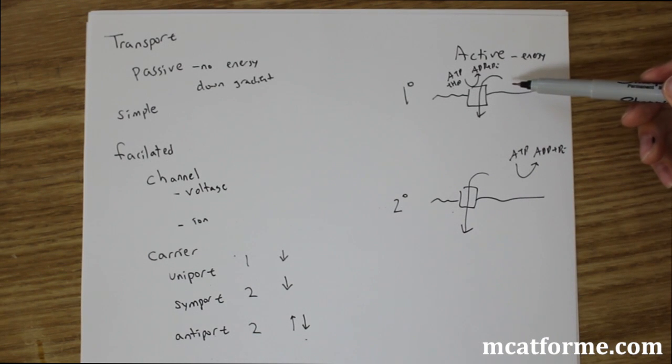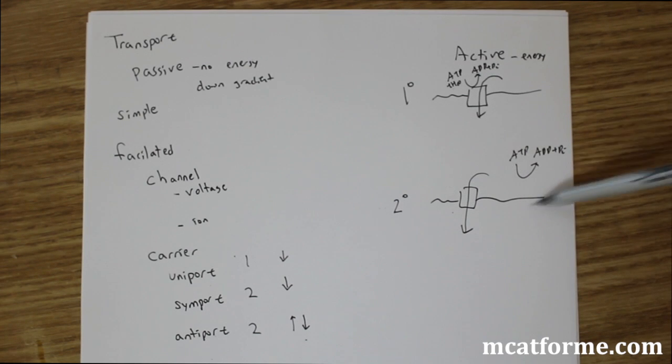So we see that primary transport uses it directly, uses ATP directly. Versus secondary uses ATP indirectly.